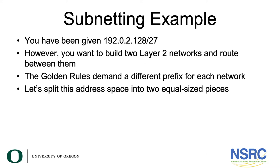We will start off with the example that we had used previously. You've been given a prefix 192.0.2.128/27. However, you want to build two layer 2 networks and route between them. The golden rules demand a different prefix for each of the networks. So how are we going to split this address space into two equal size pieces?